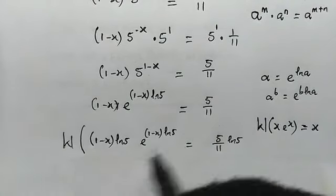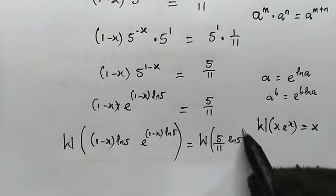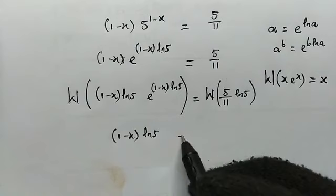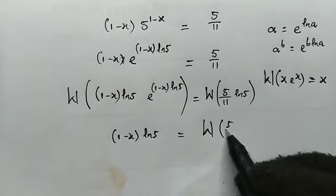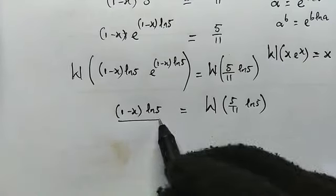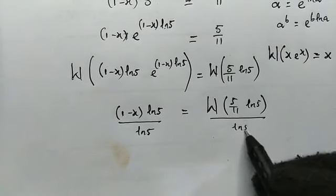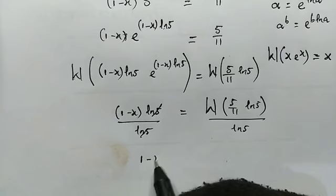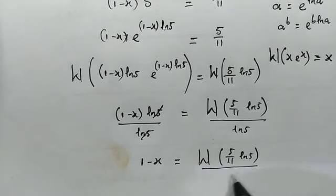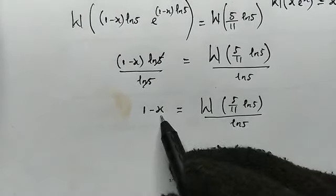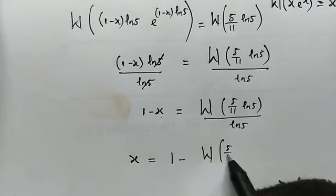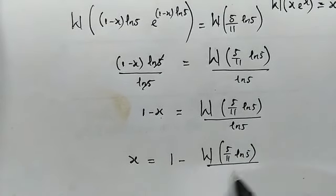So from here, let us make use of the Lambert W function on both sides. Using this property, this simplifies to just 1 minus x times ln 5, equal to W of 5 over 11 times ln 5. From here, divide both sides by ln 5. So we have 1 minus x equal to W of 5 over 11 times ln 5, divided by ln 5. Therefore x is equal to 1 minus W of 5 over 11 times ln 5, divided by ln 5.